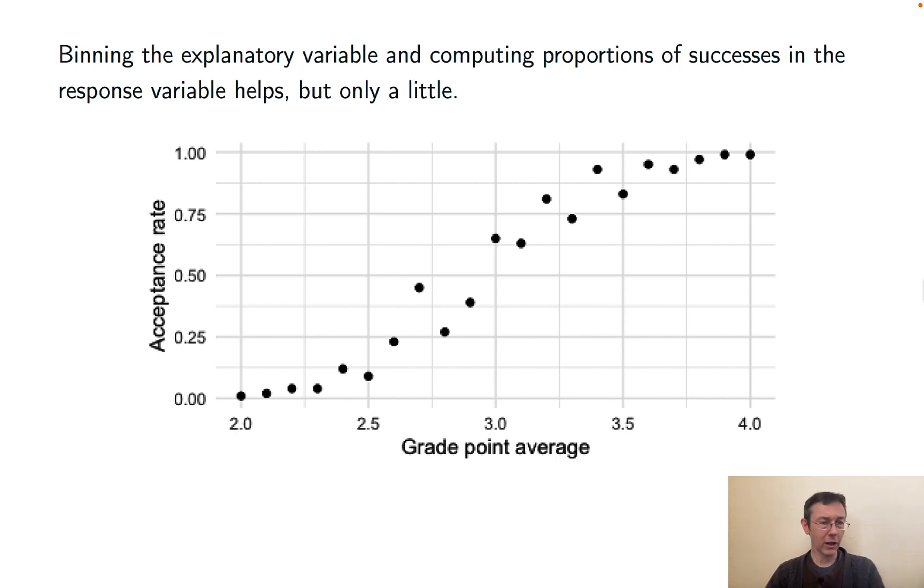You could put a regression line over that, and it would look a little better than the thing in the previous slide, but it's not going to capture the true pattern here. What we'd really like is to get a model that captures this distinctive S shape that we have in this example and many others like it, where as the explanatory variable increases, the response variable either increases or decreases from 0 to 1 with asymptotes at each of those Y values.